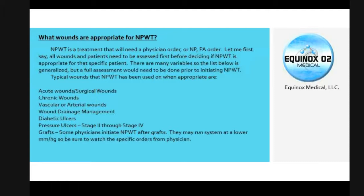What wounds are appropriate? Once you have a physician, nurse practitioner, or physician assistant order, you can look at acute wounds, surgical wounds, chronic, vascular, arterial. Sometimes we use negative pressure in wound drainage management situations, diabetic ulcers, and pressure ulcers right through stage two through four. Some physicians will order it over a graft, though there would be certain circumstances where you may not use that — you would follow the physician's protocol. Just know that the information in this webinar is generalized, so a full assessment is going to have to be done before making the determination.